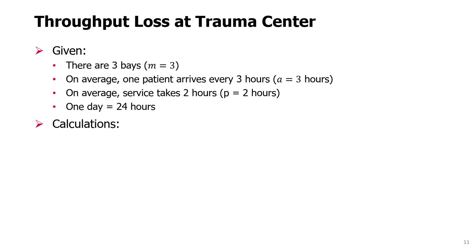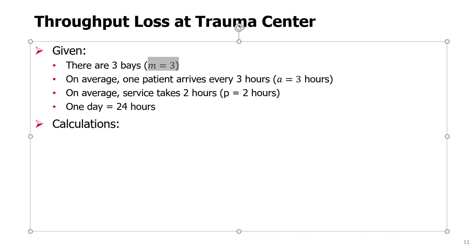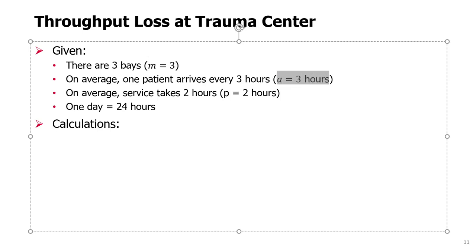Let's consider a numerical example for the trauma center. Suppose we have three bays, so M equals 3. On average, one patient arrives every three hours, so A equals 3 hours. On average, service takes two hours, so P equals 2 hours. We assume one day is 24 hours of continuous operation. Demand is 1/A = 0.333 patients per hour, or 8 patients per day.